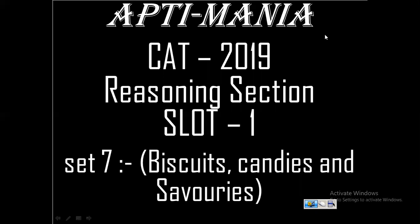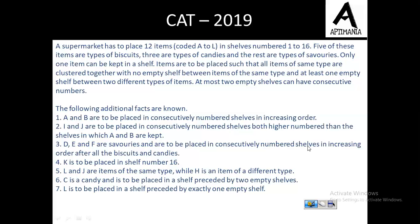Hello. In this video we are going to discuss Set 7 of the Reading Section of CAT 2019 Slot 1 Paper. The set was like: a supermarket has to place 12 items in shelves numbered 1 to 16. 5 of these items are types of biscuits, 3 are types of candies and the rest are types of savouries.